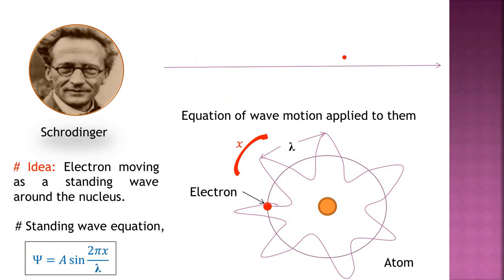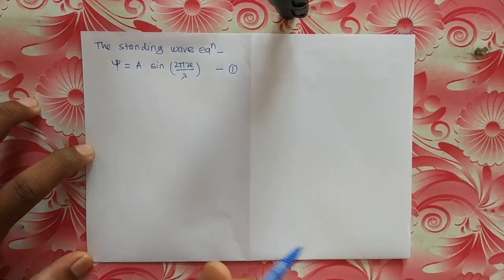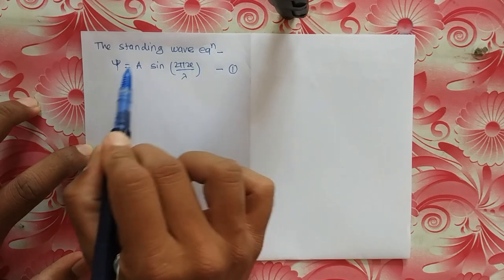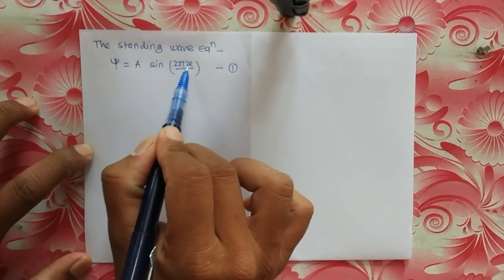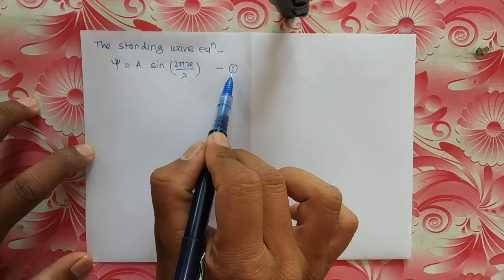The equation for such a standing wave is given as psi equals a sin(2πx / lambda), where psi is the wave function of the moving electron, a is a constant, x is the displacement of the electron along the x-direction, and lambda is the wavelength of the moving electron. This standing wave equation is equation number 1.